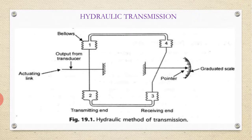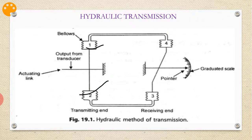The next one is hydraulic transmission. The figure shows the hydraulic method of transmission which is commonly used. Here, four bellows are employed — two are at the transmitting end and two are at the receiving end. The four bellows are connected by an impulse pipeline, and the whole system is filled with liquid.